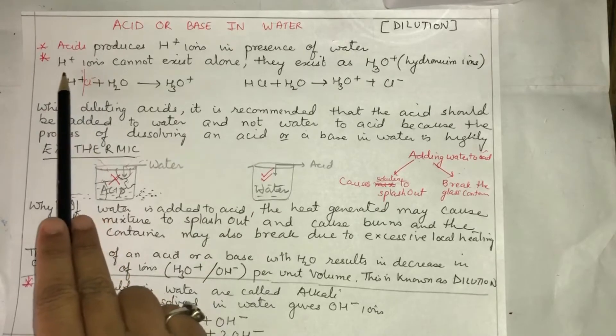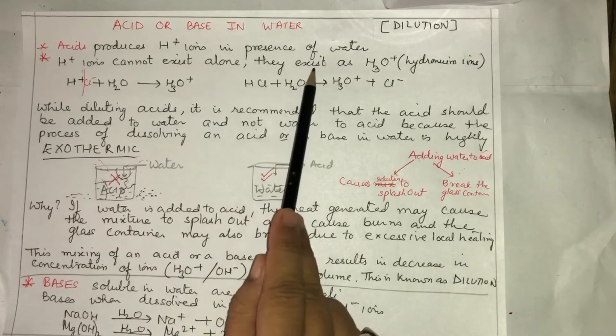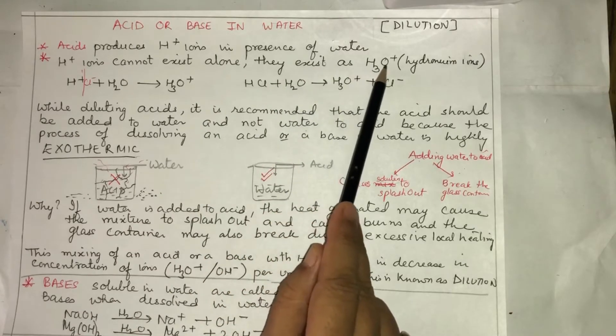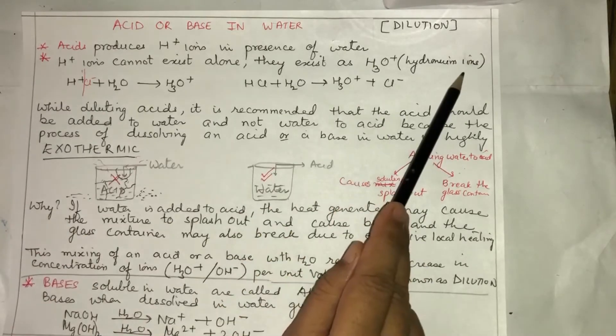Now these H+ ions cannot exist alone. They exist as H3O+, which is called hydronium ion. How is this hydronium ion formed?